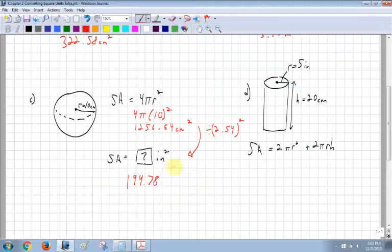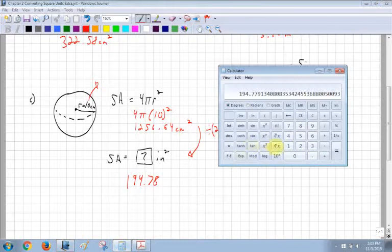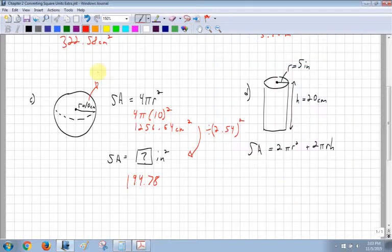Let's see what would happen if I divided this first. So first of all, I'm going to divide 10. I take my 10 centimeters. I divide that by 2.54. 2.54. I get 3.937. I'll leave it like that.